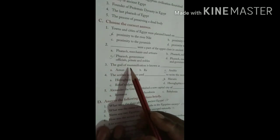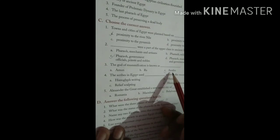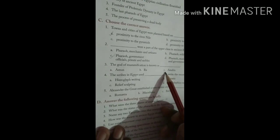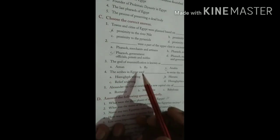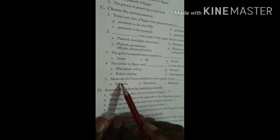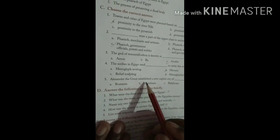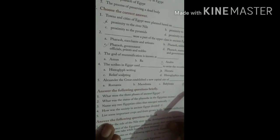Now third, the god of mummification is known as Anubis, C option. Now fourth, scribes in Egypt used hieratic to write the records. Alexander the Great established a new capital city of Alexandria, option D.